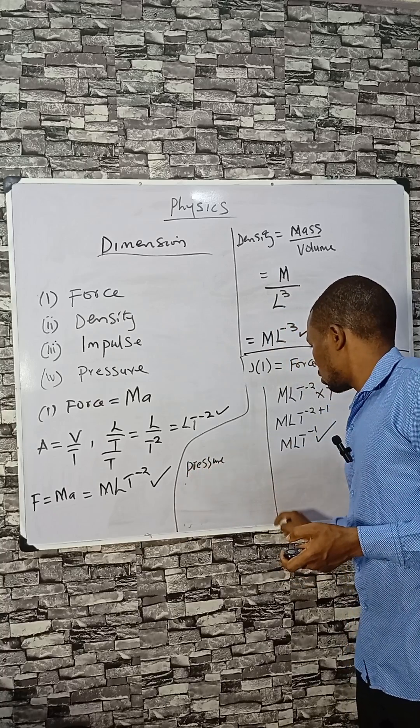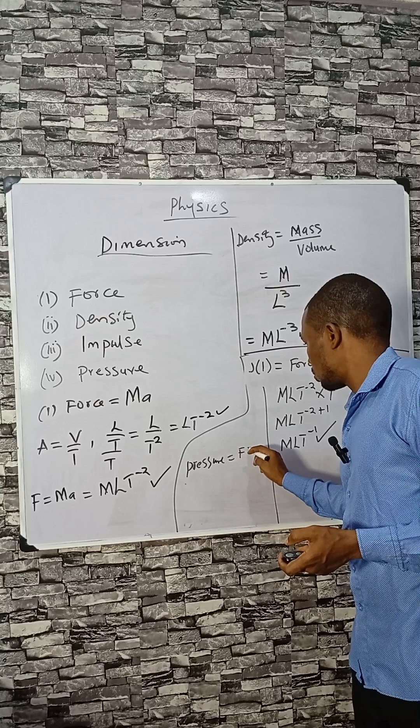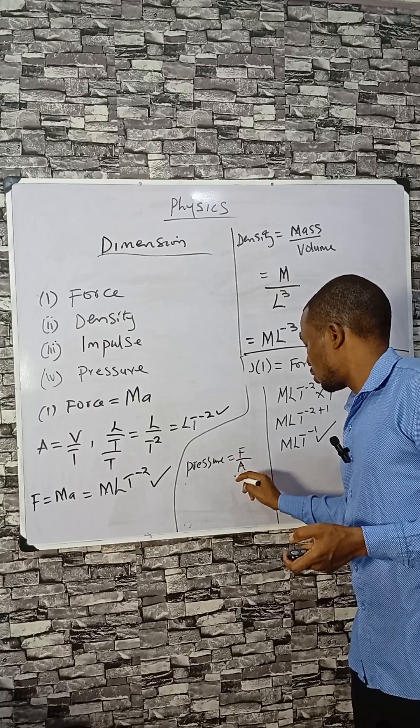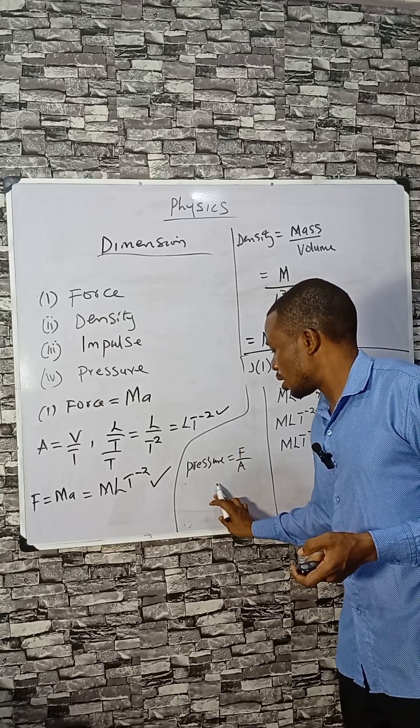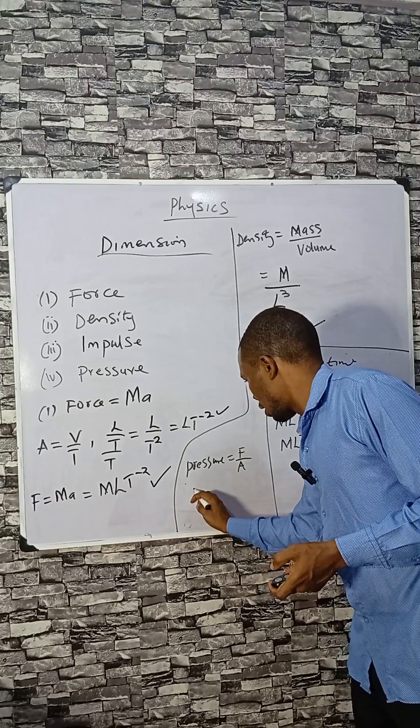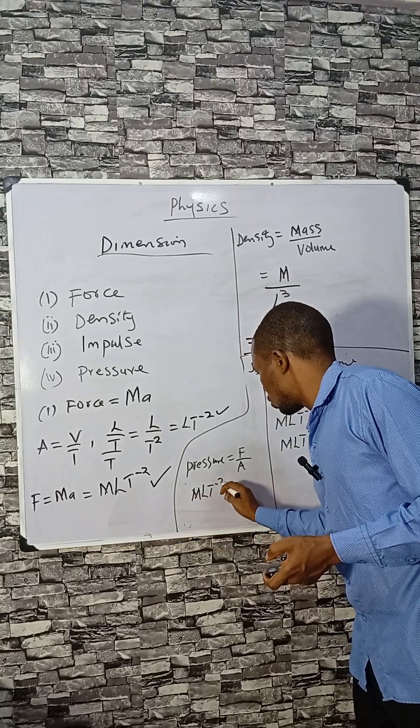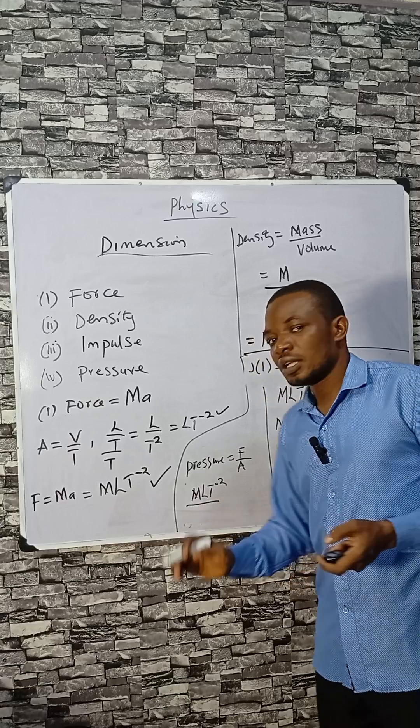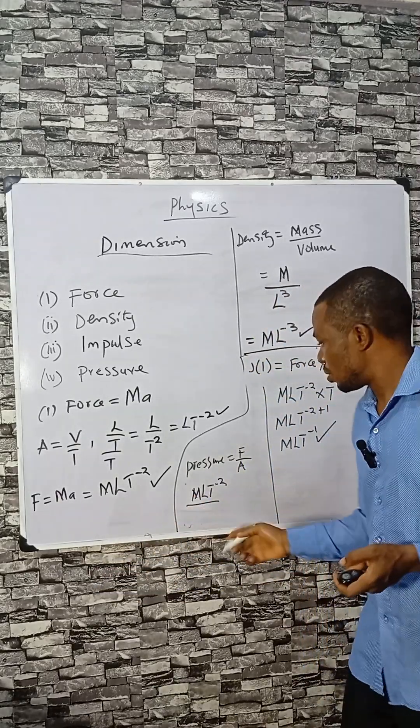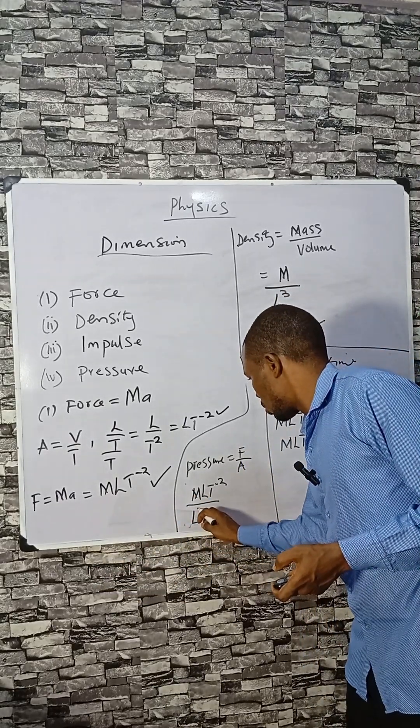Pressure is force per unit area. So force is expressed as M L T minus two. Area is length times length, or length times breadth, it's just L power two.